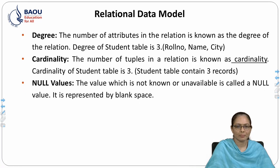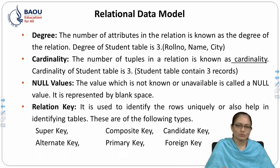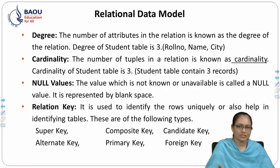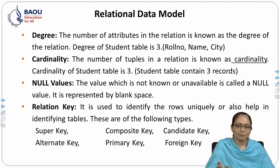A null value represents unknown or unknown values — not a blank space, but filled as null in a particular cell when a value is not known, for example when a student's city is unknown. A relation key is used to uniquely identify rows. Types of keys include: super key, candidate key, composite key, alternate key, primary key, and foreign key.